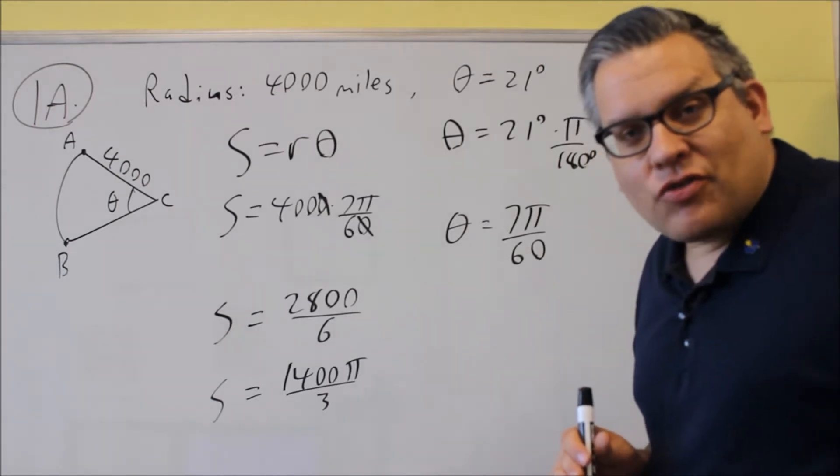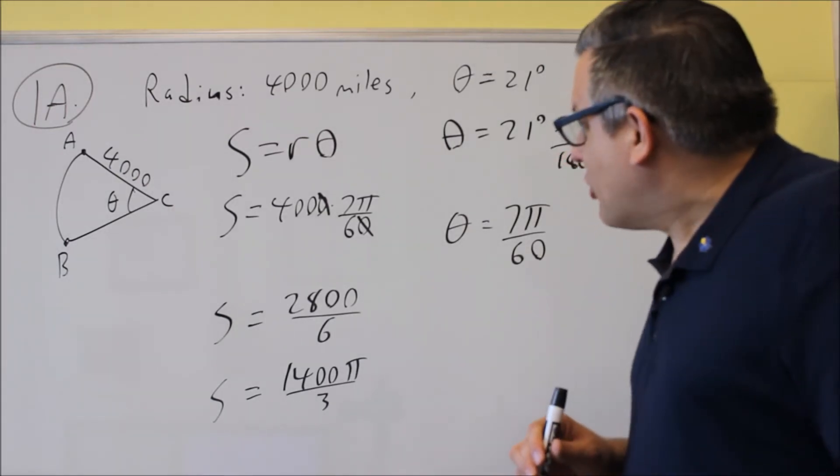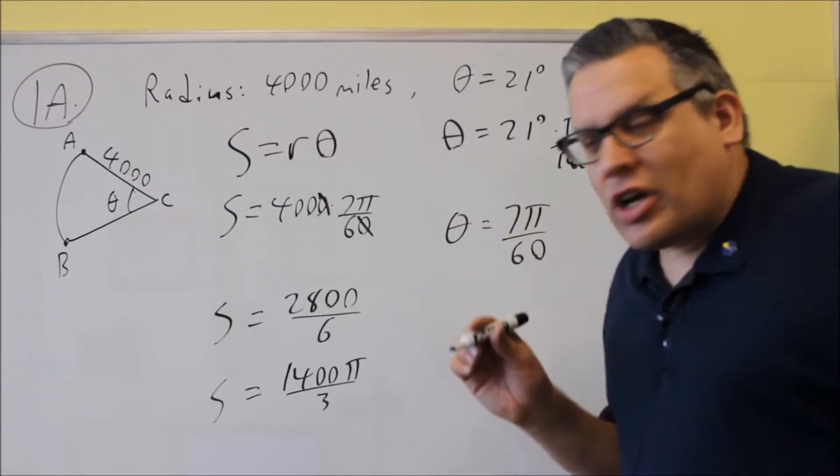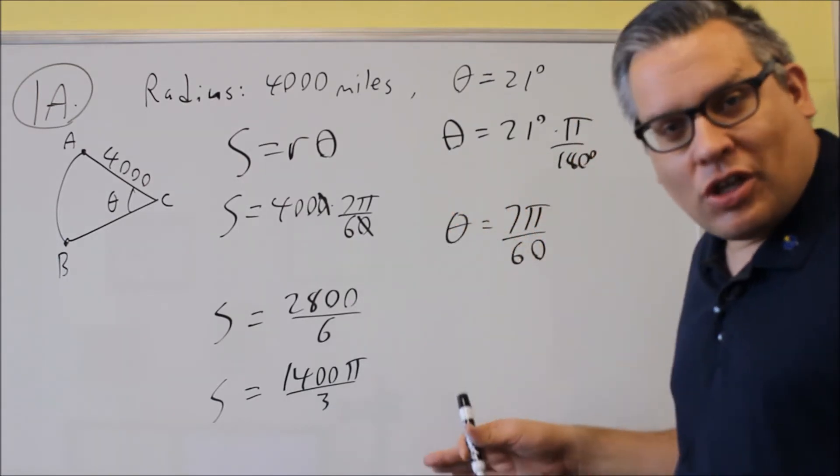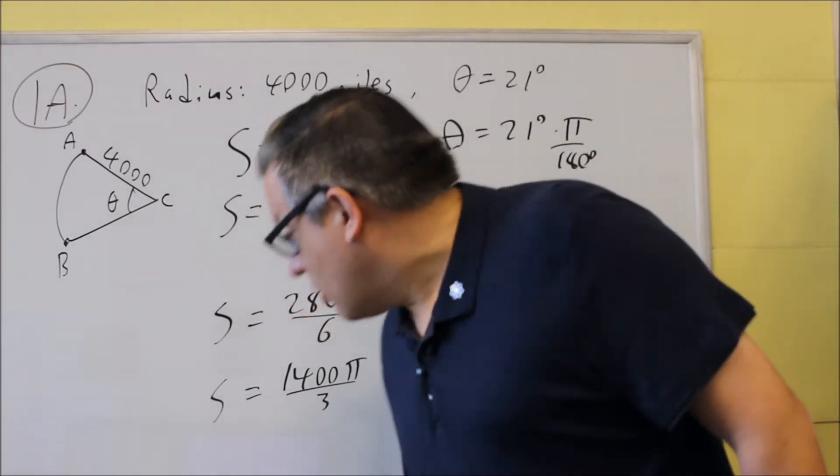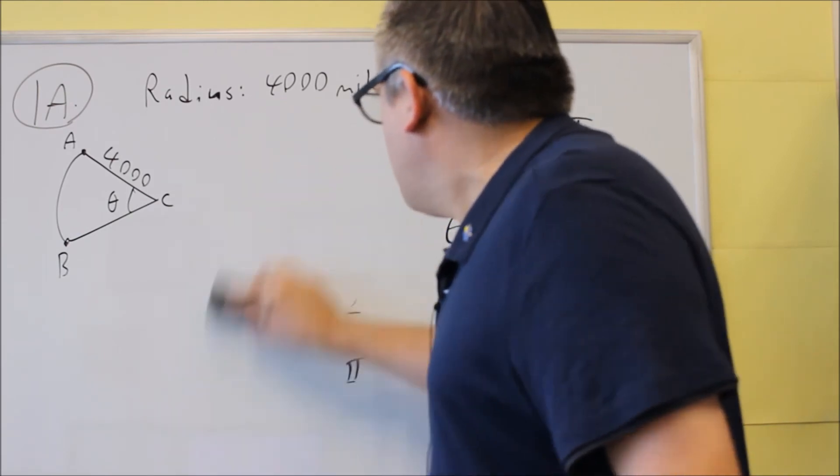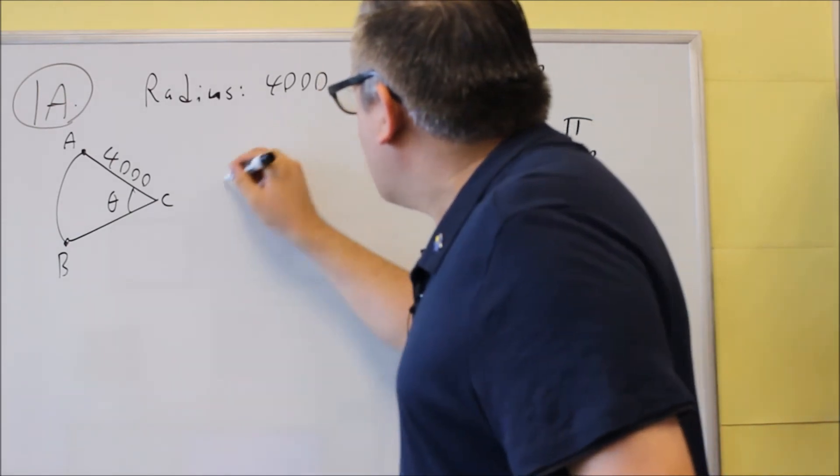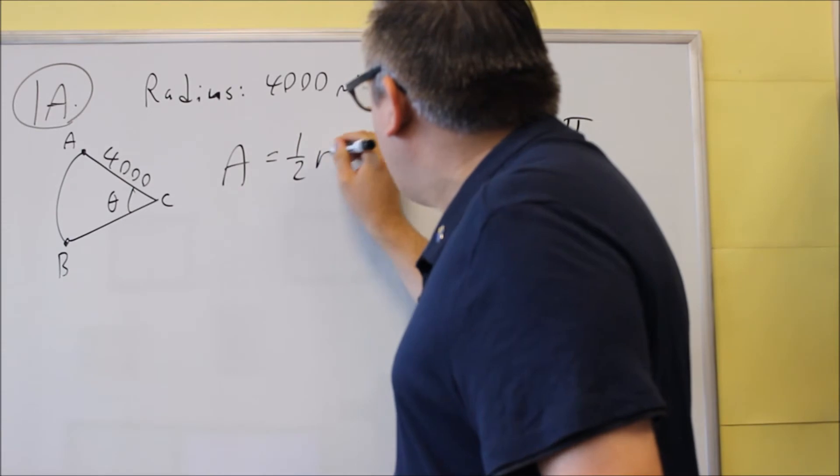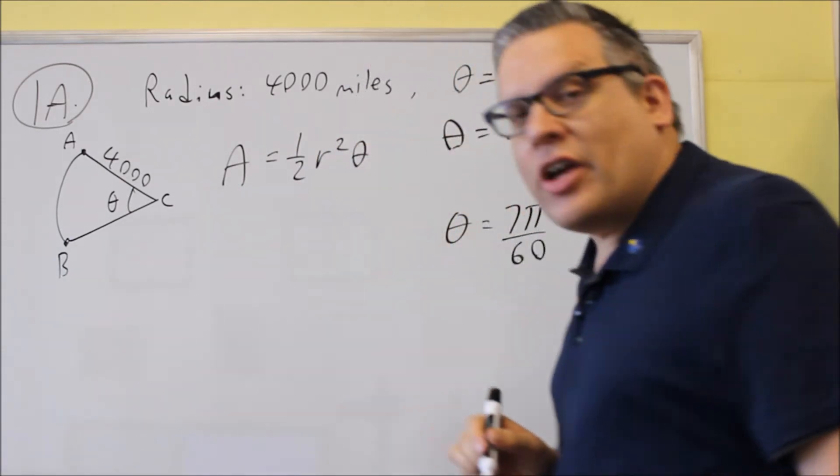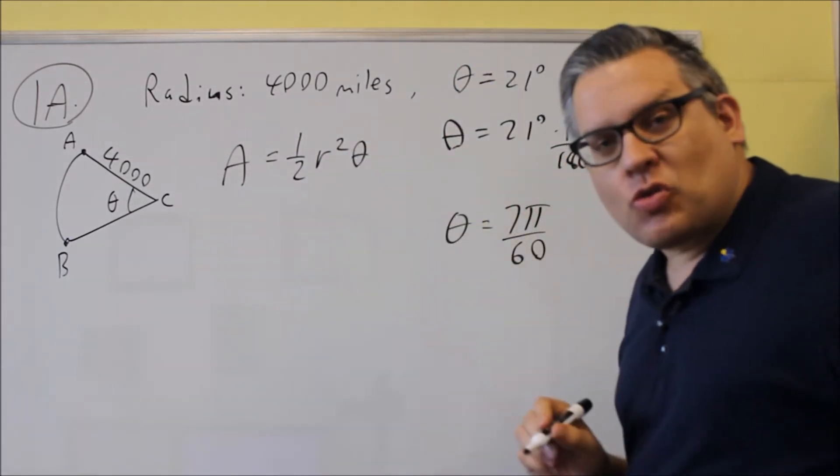Now the second thing it asks for is the area of a sector. Now for area of a sector, so I'll give you a second to get this down, and then I'm going to erase it. So next, we're now going to do area of a sector. So we're going to do area equals 1/2 r squared theta is the formula. Don't forget about the square.